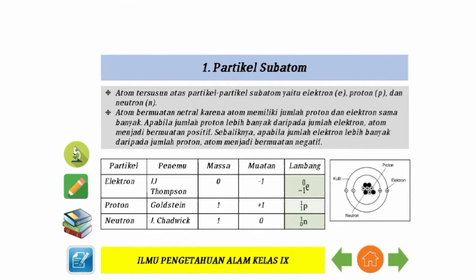Partikel subatom. Atom tersusun atas partikel-partikel subatom yaitu elektron (E), proton (P), dan neutron (N). Atom bermuatan netral karena atom memiliki jumlah proton dan elektron sama banyak. Apabila jumlah proton lebih banyak daripada jumlah elektron, atom menjadi bermuatan positif. Sebaliknya, apabila jumlah elektron lebih banyak daripada jumlah proton, atom menjadi bermuatan negatif.